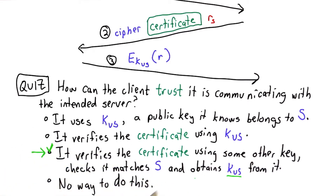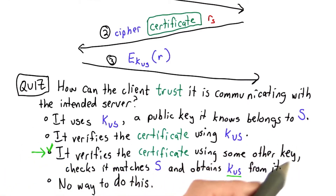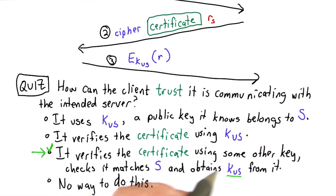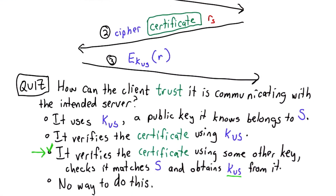That's why we need the third solution, which uses some other key that the client already trusts to verify the certificate, and then uses the information in the certificate to know that it's the right server and to know the server's public key.